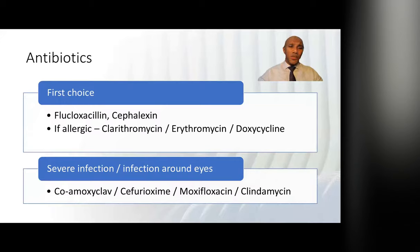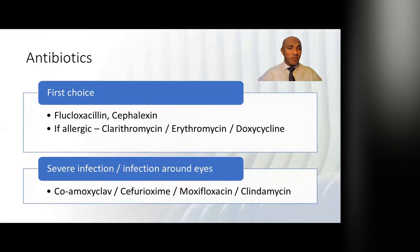When it comes to antibiotics for a mild episode of cellulitis, you can use flucloxacillin or cefalexin. If the patient is allergic, you can use clarithromycin, erythromycin, or doxycycline. For severe infection or periorbital or facial cellulitis, you need stronger antibiotics — your options will be co-amoxiclav, cefuroxime, moxifloxacin, or clindamycin.